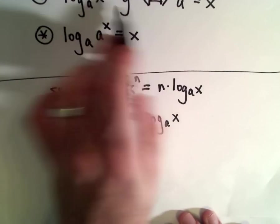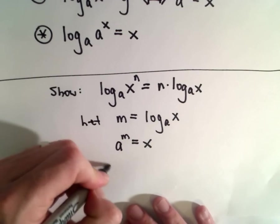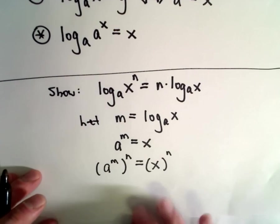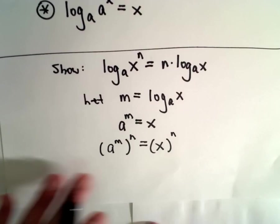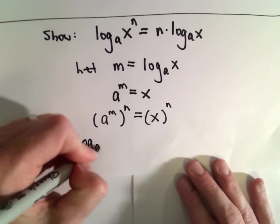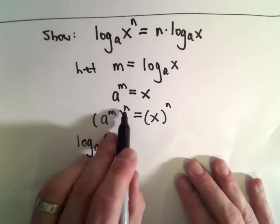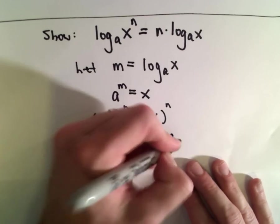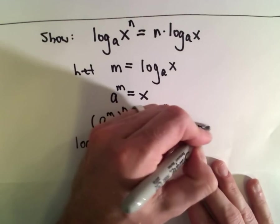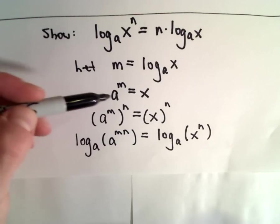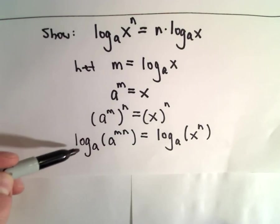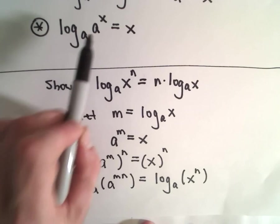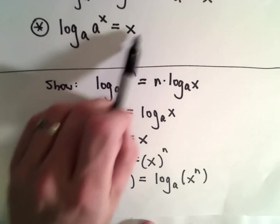The next thing is to simply raise both sides to the power of n. Then I'm going to take log base a of both sides. Using properties of exponents, a to the m raised to n gives a to the m times n. So we have log base a of a to the m times n on the left, and log base a of x to the n on the right. Now I use the cancellation property: log base a of a to some exponent just leaves that exponent.